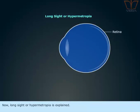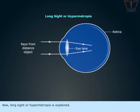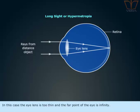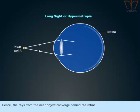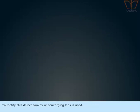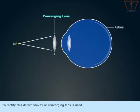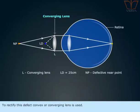Now long sight or hypermetropia is explained. In this case the eye lens is too thin and the far point of the eye is infinity, but the nearer point is greater than 25 cm. Hence the rays from the nearer object converge behind the retina. To rectify this defect, a convex or converging lens is used.